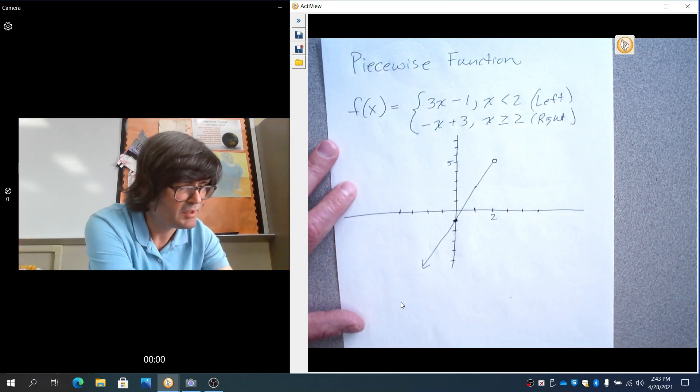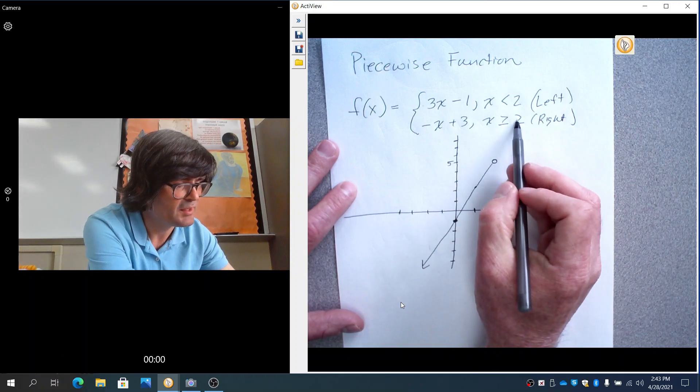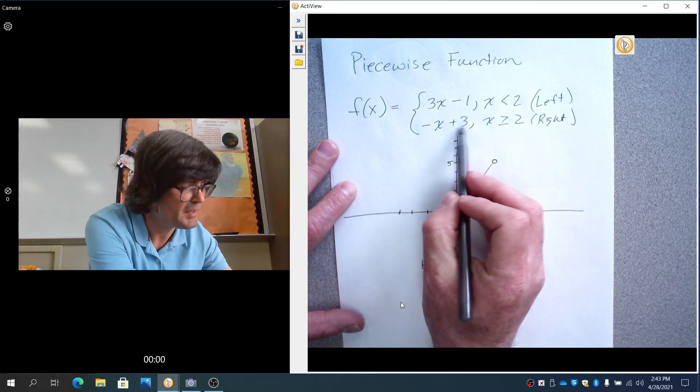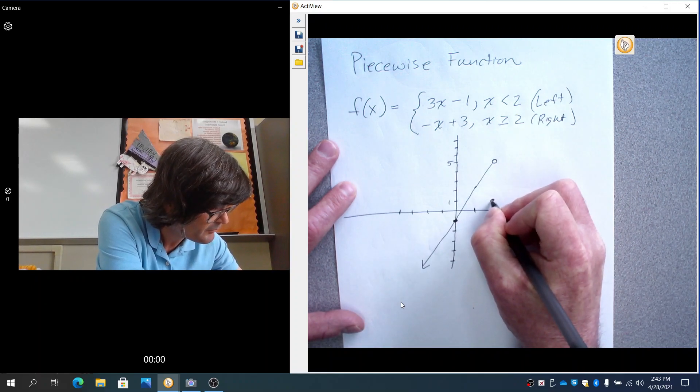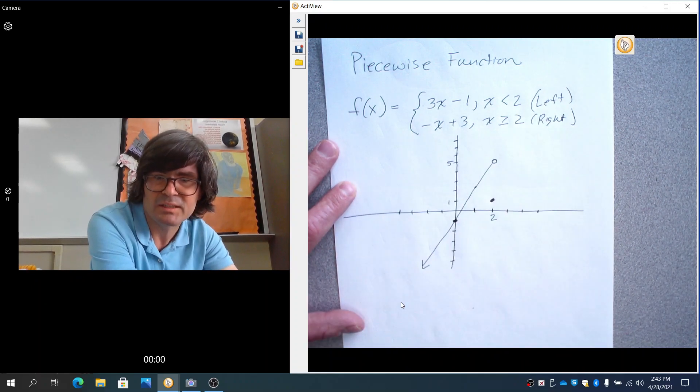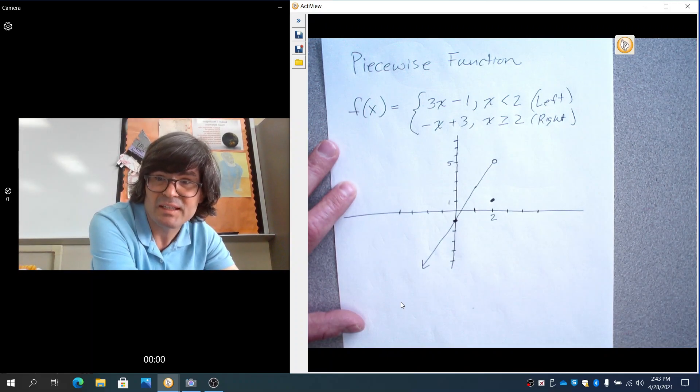And then next, we're going to graph the right piece. I'm going to start at 2 again, put in 2 right here. Negative 2 plus 3 makes 1. So here's 1. This time, I'll use a solid dot. Solid dot. And to indicate that we are on that point itself.